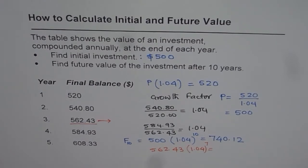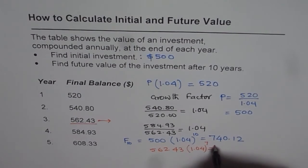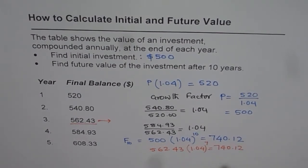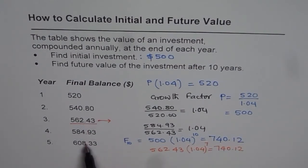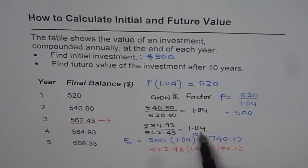So we get 562.43 times 1.04 to the power of 7 and what do we get. We get the same amount 740.12. So we could find by multiplying any one of these by a factor of 1.04. Other alternative could be keep on multiplying by 1.04 and get next year's value. So there are alternate ways of doing the same thing.